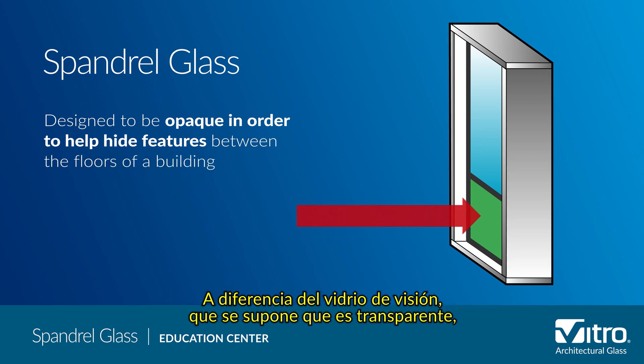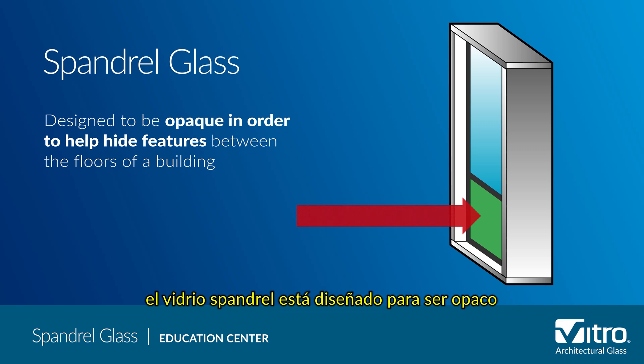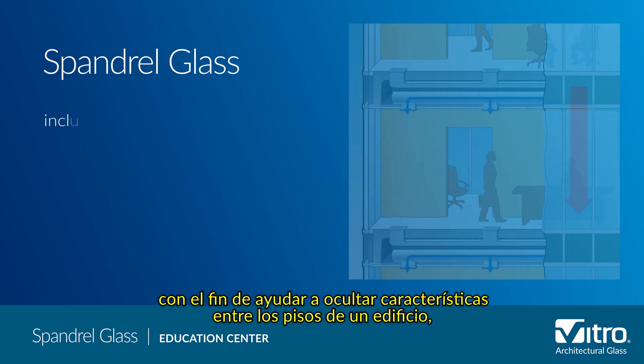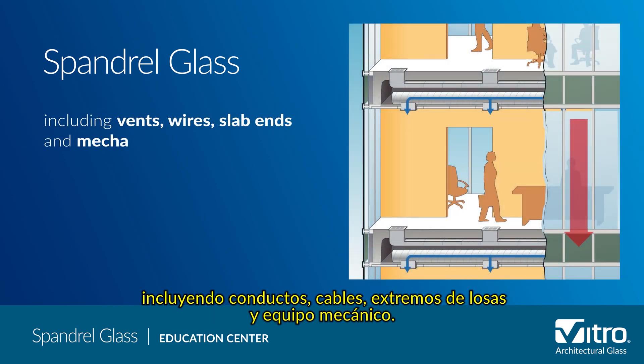Unlike vision glass which is meant to be transparent, spandrel glass is designed to be opaque in order to help hide features between the floors of a building, including vents, wires, slab ends, and mechanical equipment.